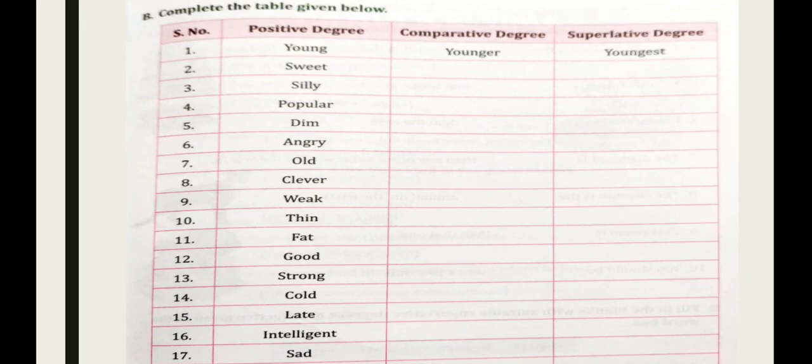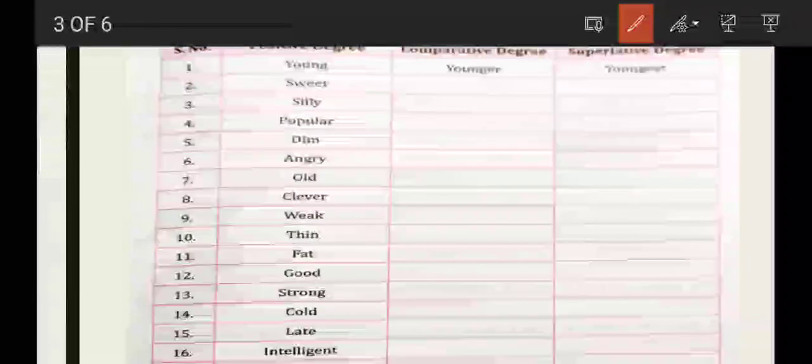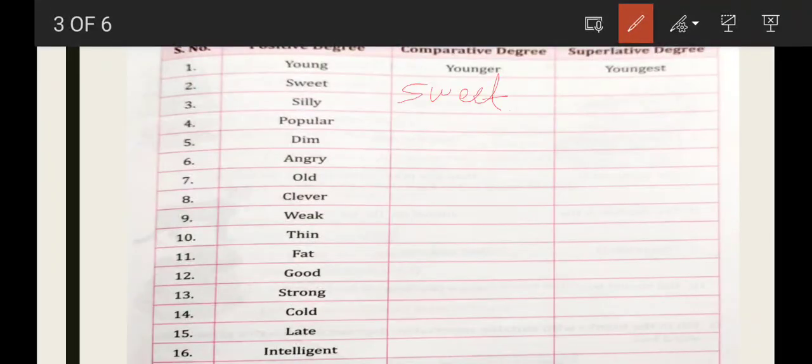Next is positive degree. Here we will see what will happen. Sweet, sweeter, sweetest. So it's a very simple way.